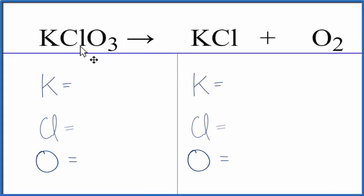To balance the equation for the decomposition of potassium chlorate into potassium chloride and oxygen, let's count the atoms up on each side of the equation.